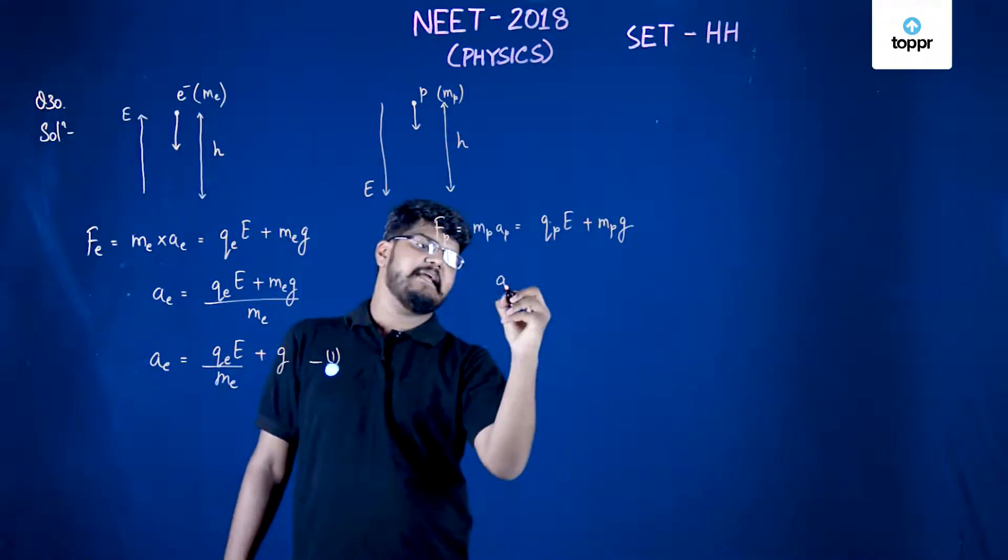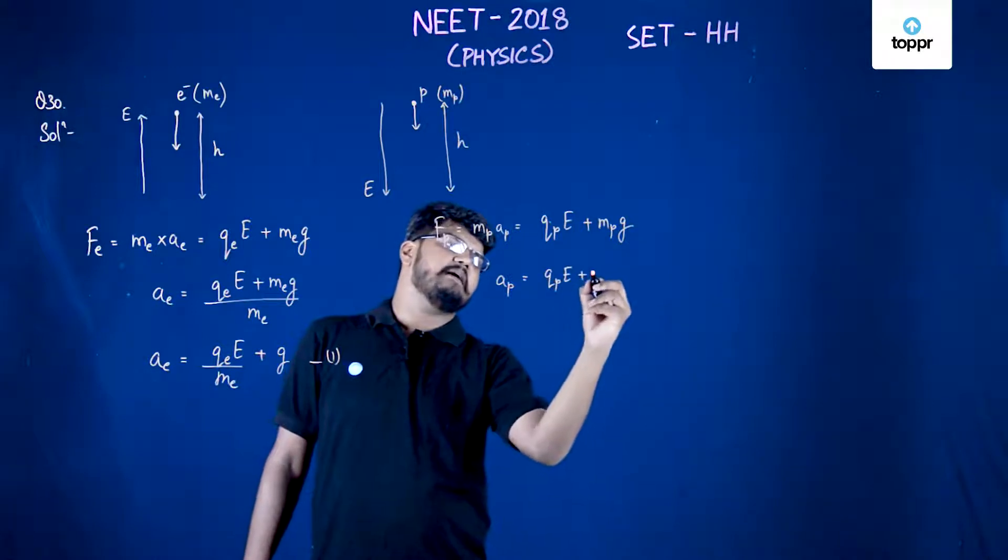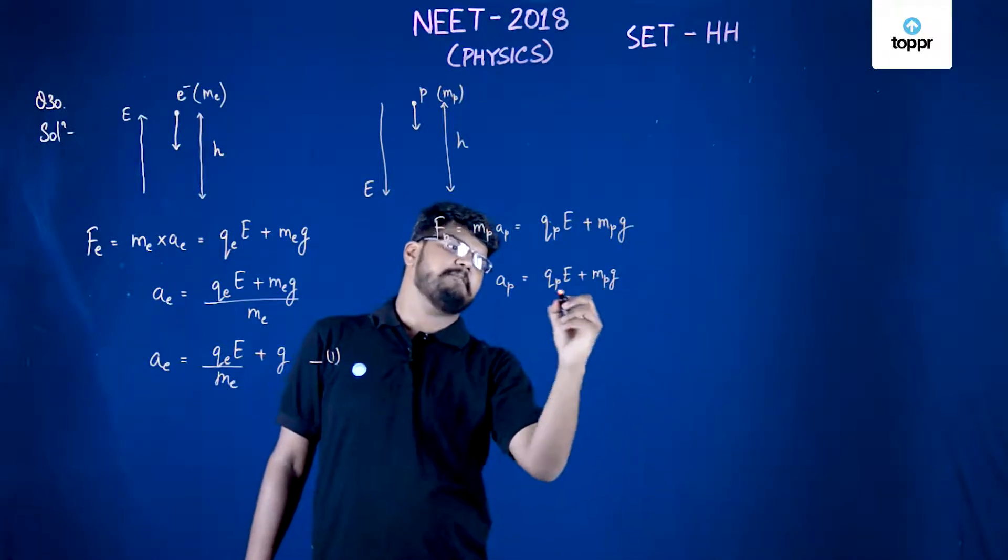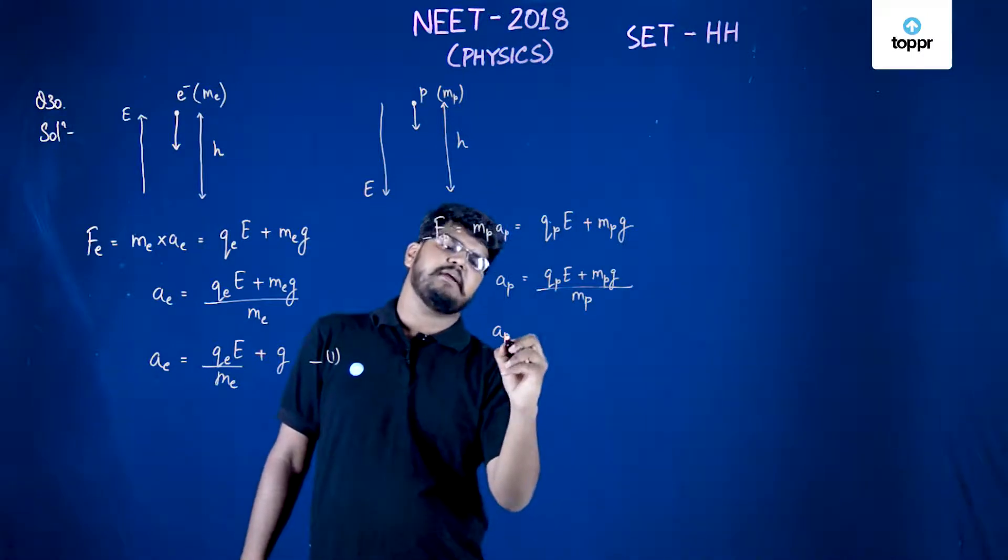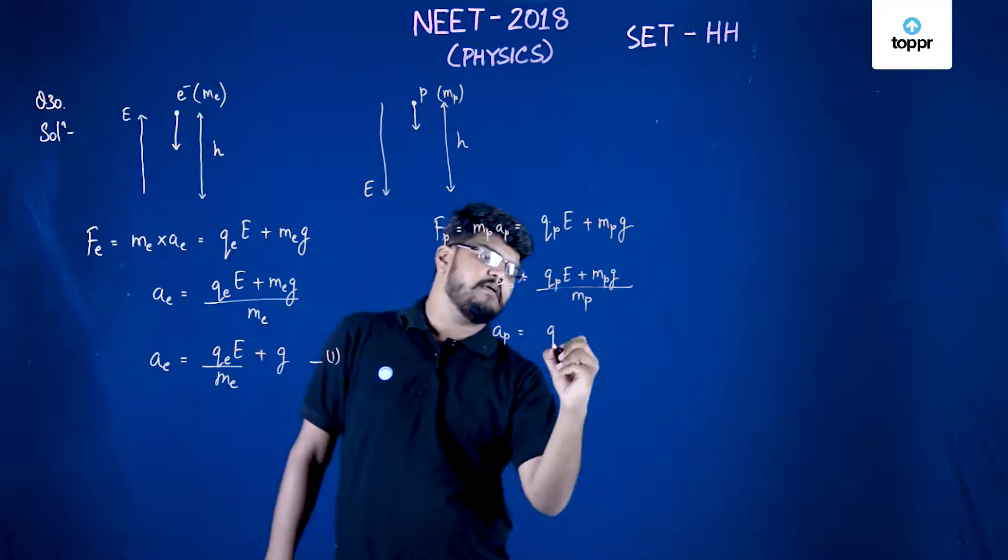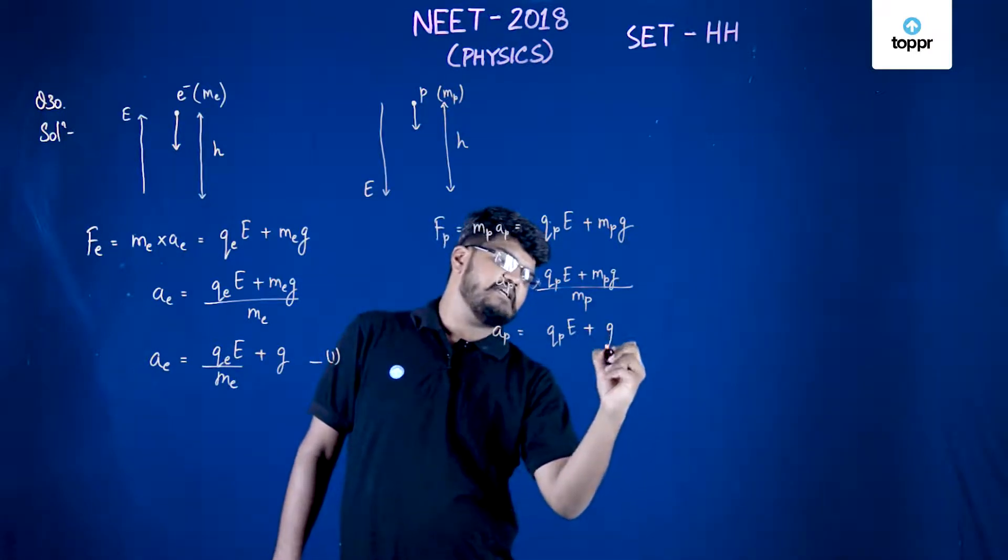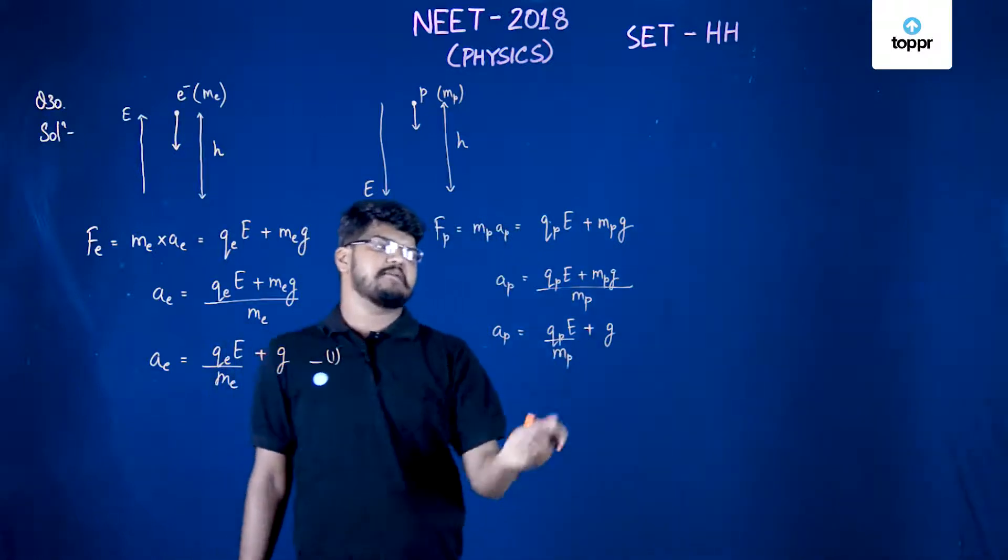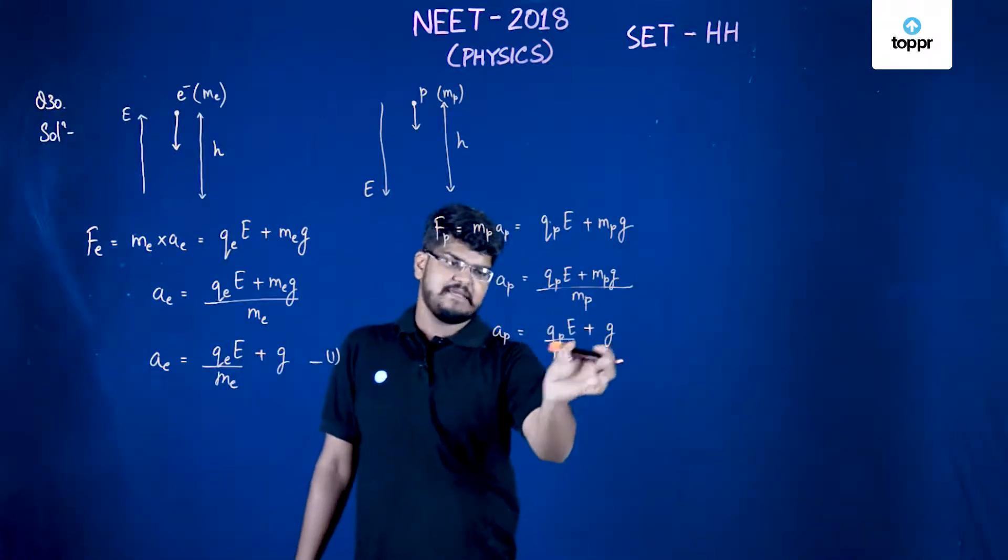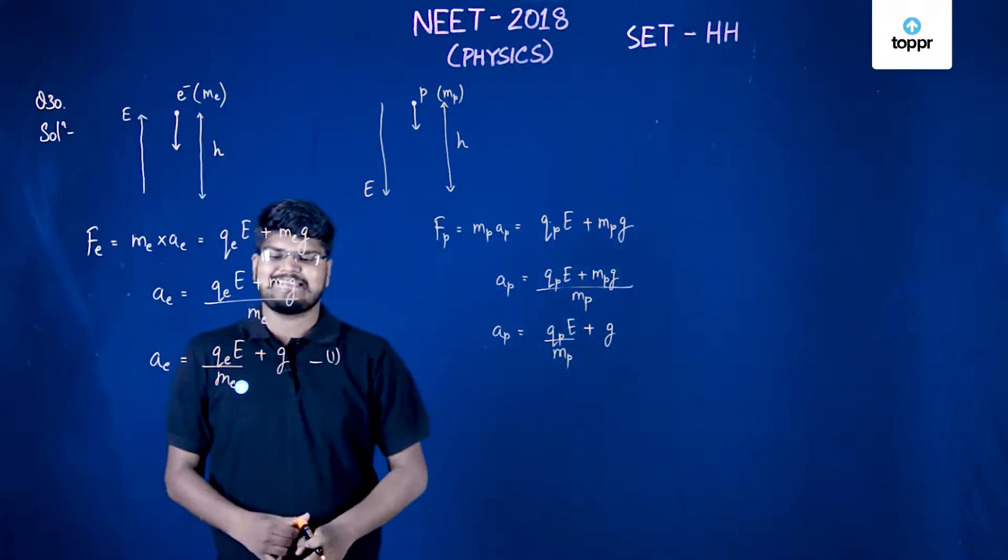When you simplify it, AP will be equal to QP*E plus MP*G upon MP. Or you can say that AP is equal to QP*E plus G, and this value is divided by MP. Here, MP will cancel with this MP when you take MP separately on the denominator of MP*G, which is the similar case as before.